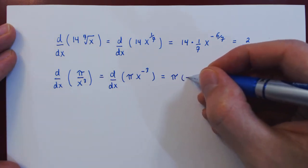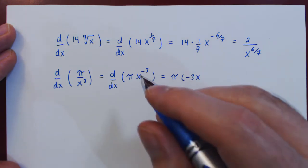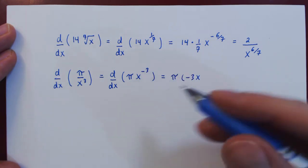So we bring down the exponent, subtract 1 from the original exponent. Negative 3 minus 1 is negative 4.